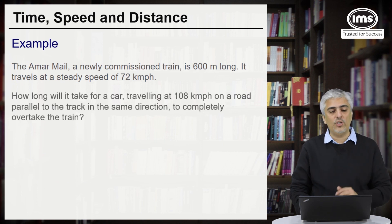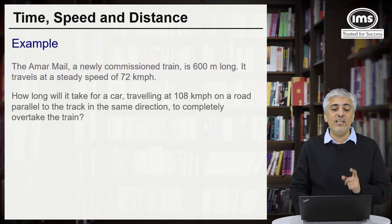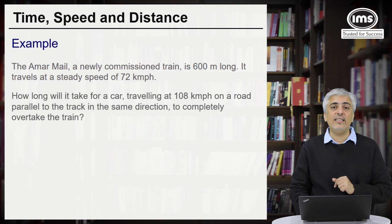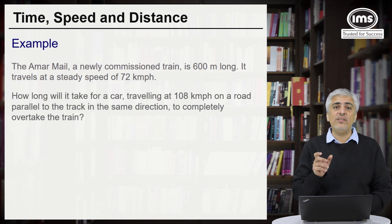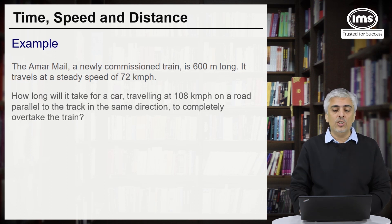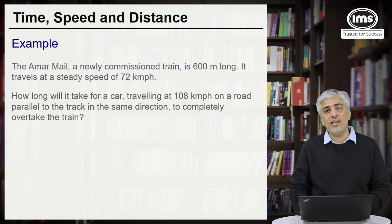Same train again — 600 meters long at 72 km per hour. How long will it take for a car travelling at 108 km per hour on a road parallel to the track in the same direction to completely overtake the train? Whenever we talk about a car, we consider its length as negligible compared to the train unless clearly mentioned. So here the length of the car is negligible. The speed of the car is 108 and the speed of the train is 72.